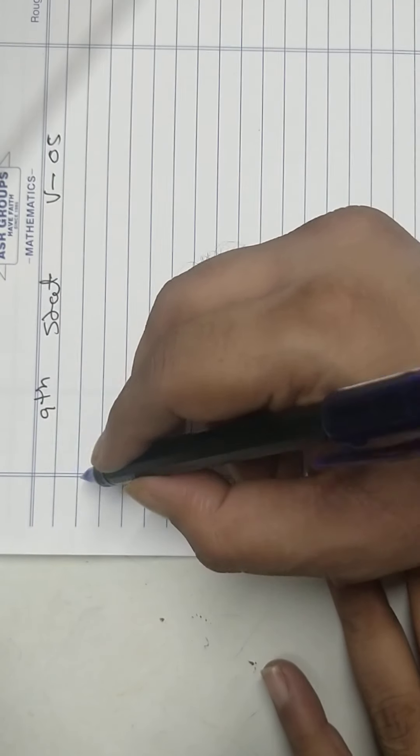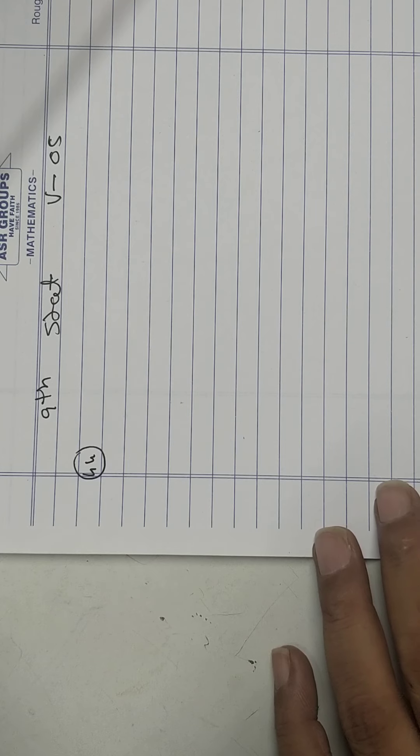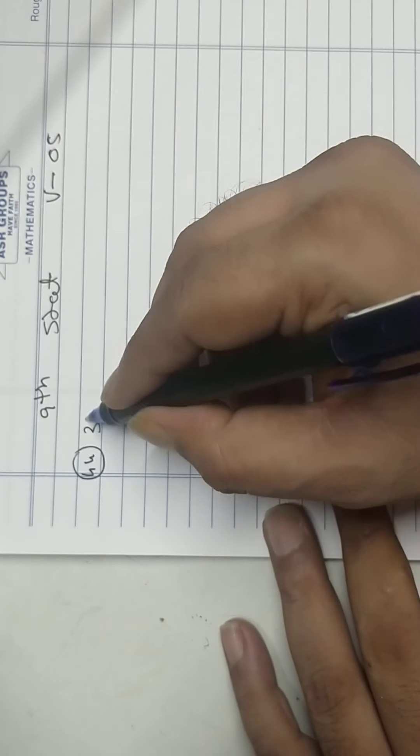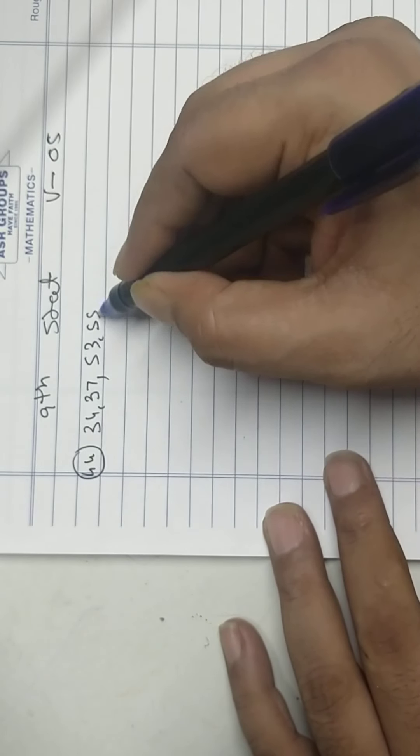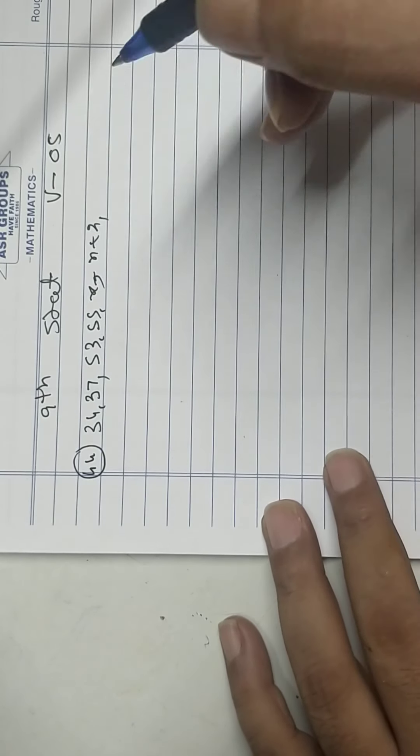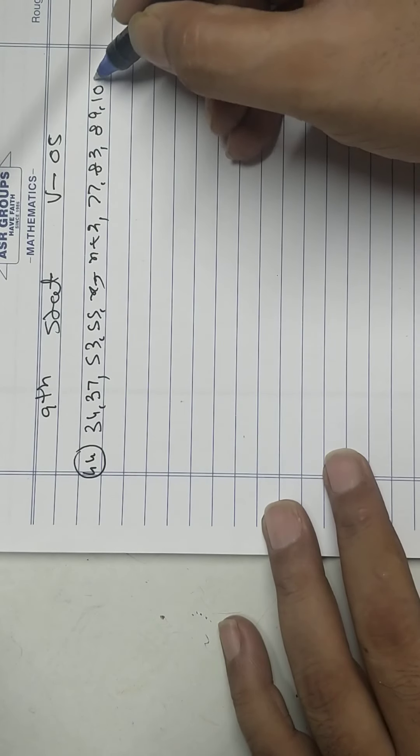Ninth statistics video number 5. Problem 44: Numbers already arranged in ascending order: 34, 37, 53, 55, x, x plus 2, 77, 83, 89, 100.